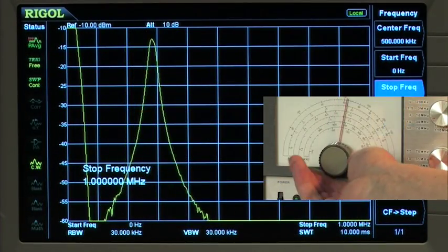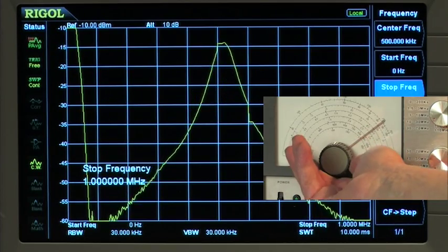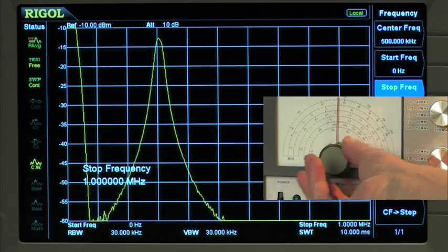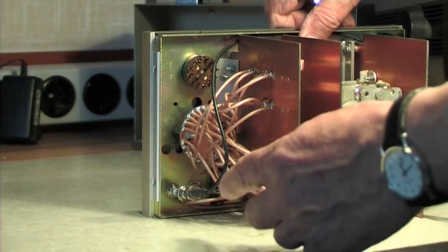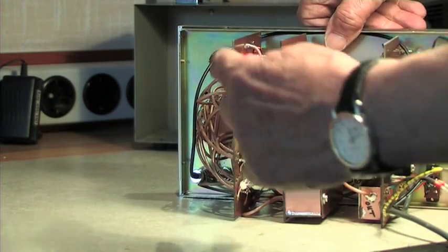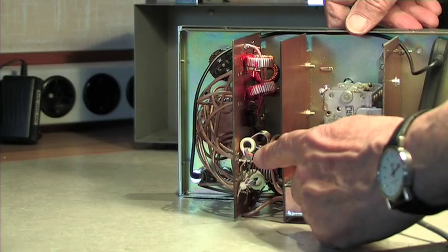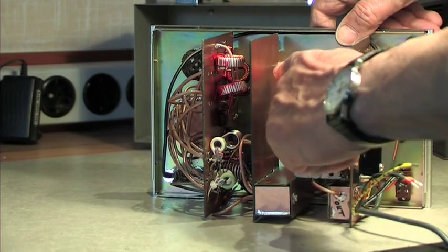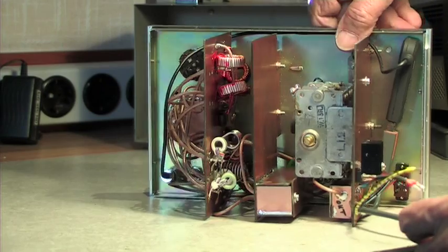With spectrum analyzer and tracking generator, a nice view on the tunable filters. On the back you can see the band switch between the several tunable filters, the ferrite toroid, and space for the bandpass filters not already built right now.